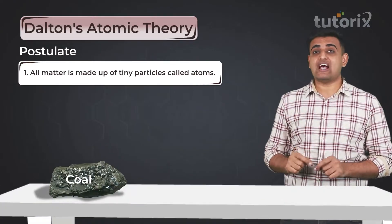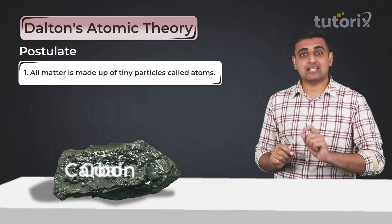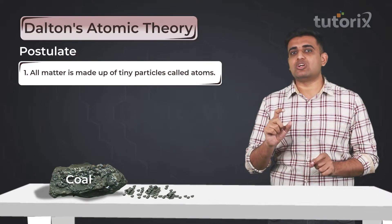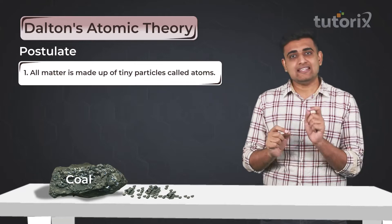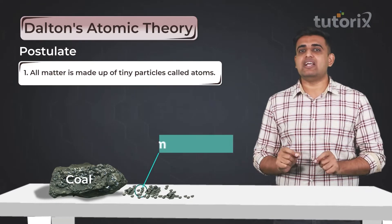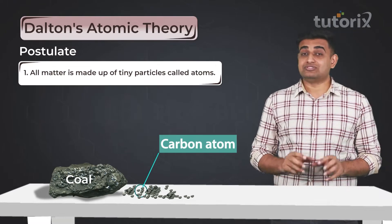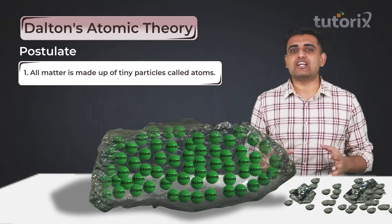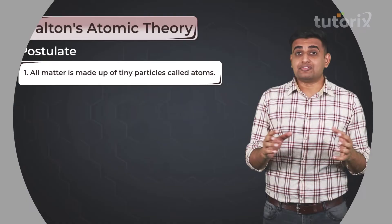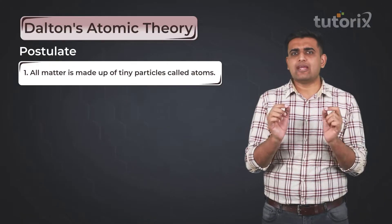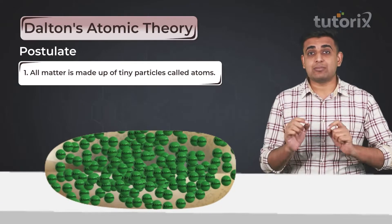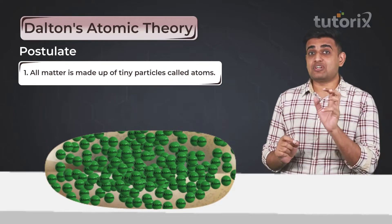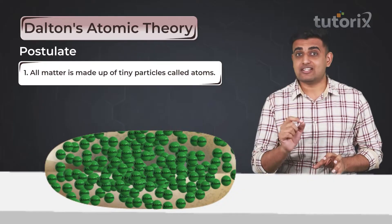For example, suppose we have a piece of coal, which is nothing but carbon. If we keep on dividing this piece of coal into smaller and smaller sections, what we get in the end — which we can't further divide — is an atom of carbon. That means this piece of coal is made up of millions of atoms of carbon. This was the first time the world came to know that all matter is made up of tiny particles called atoms.